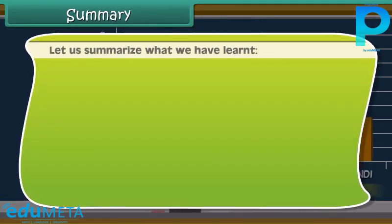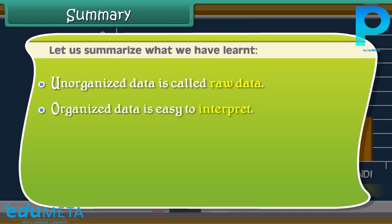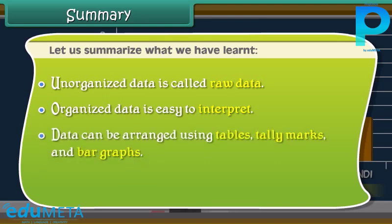Let us summarize what we have learnt. Unorganized data is called raw data. Organized data is easy to interpret. Data can be arranged using tables, tally marks and bar graphs.